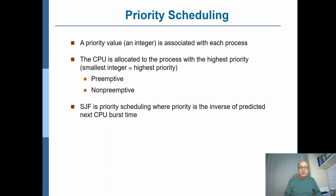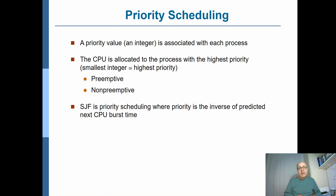In priority scheduling, a priority is an integer value associated with every process. The CPU will be allocated to the process with the highest priority. You can use larger or smaller numbers to indicate priority — we'll assume that smaller integer values indicate higher priority, so a priority of one means the highest priority.